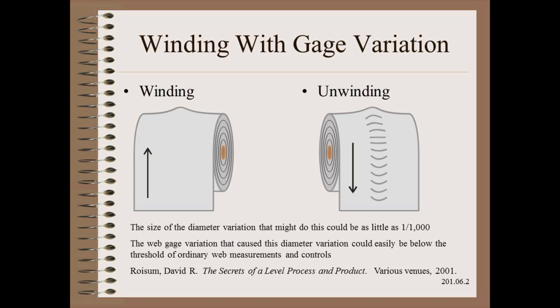Almost always, the thickness variation that caused the problem is below the threshold of ordinary online scanners and lab tests. Thus, we often have to infer the mechanism from the results. The web is flat before winding, but not when unwound. To be certain, you may need to intercept the web prior to hitting the winder.